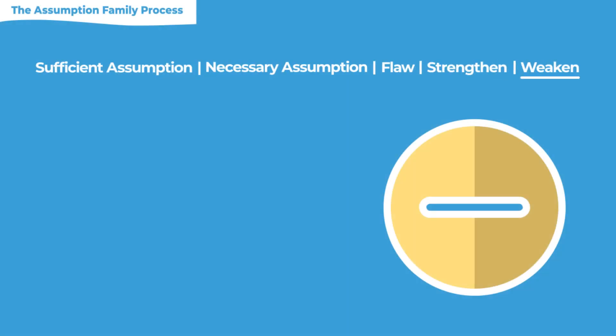The process you want to use when approaching a weakened question is the same process as when working on any question in the assumption family — whether that be a sufficient assumption question, a necessary assumption question, flaw question, or strengthen question. All of these question types rely on the same process because they're measuring our ability to evaluate arguments from slightly different perspectives. The first step is to find the conclusion of the argument.